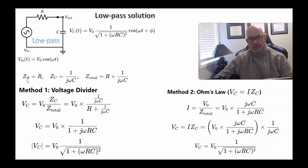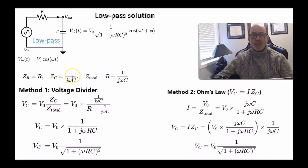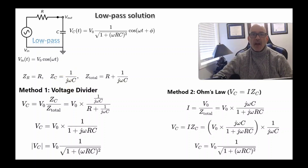To solve this problem we need to know that a resistor has impedance R and a capacitor has impedance 1 over j·omega·C. The j is equal to the square root of negative one, and we use that to calculate the phase angle. I'll go through that on the next slide.